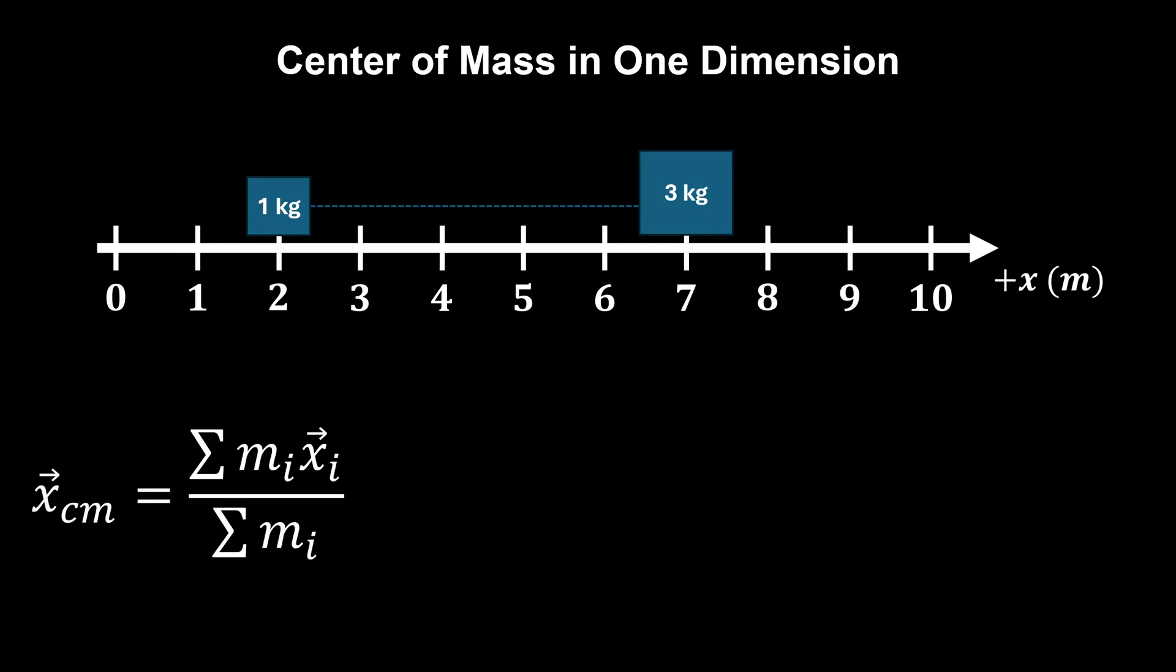Now let's try the calculation. The one-kilogram object is at a position of two meters, so one times two, and the three-kilogram object is at a position of seven meters, so three times seven for the numerator. Make sure you multiply the masses and the positions first before you add them up.